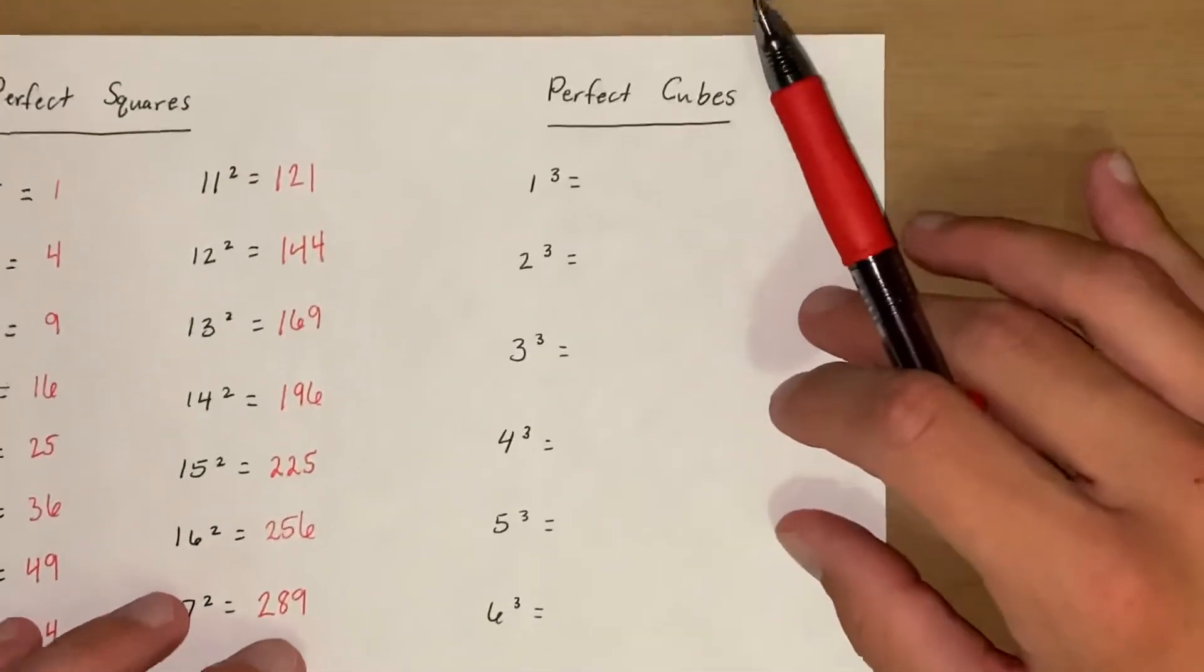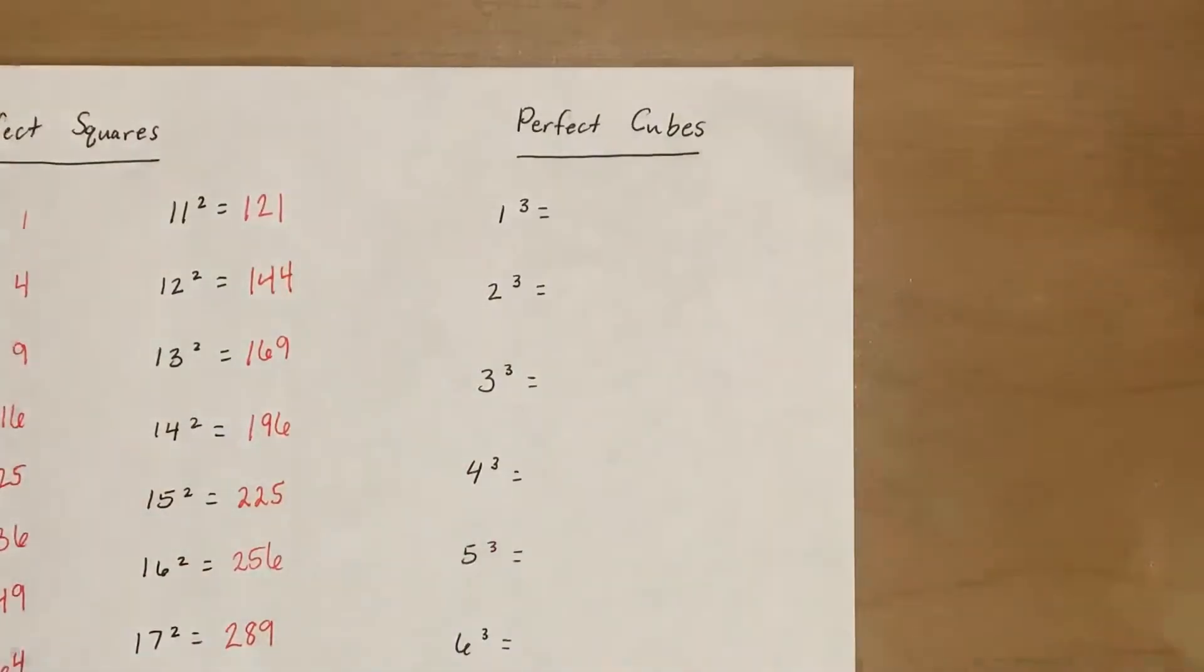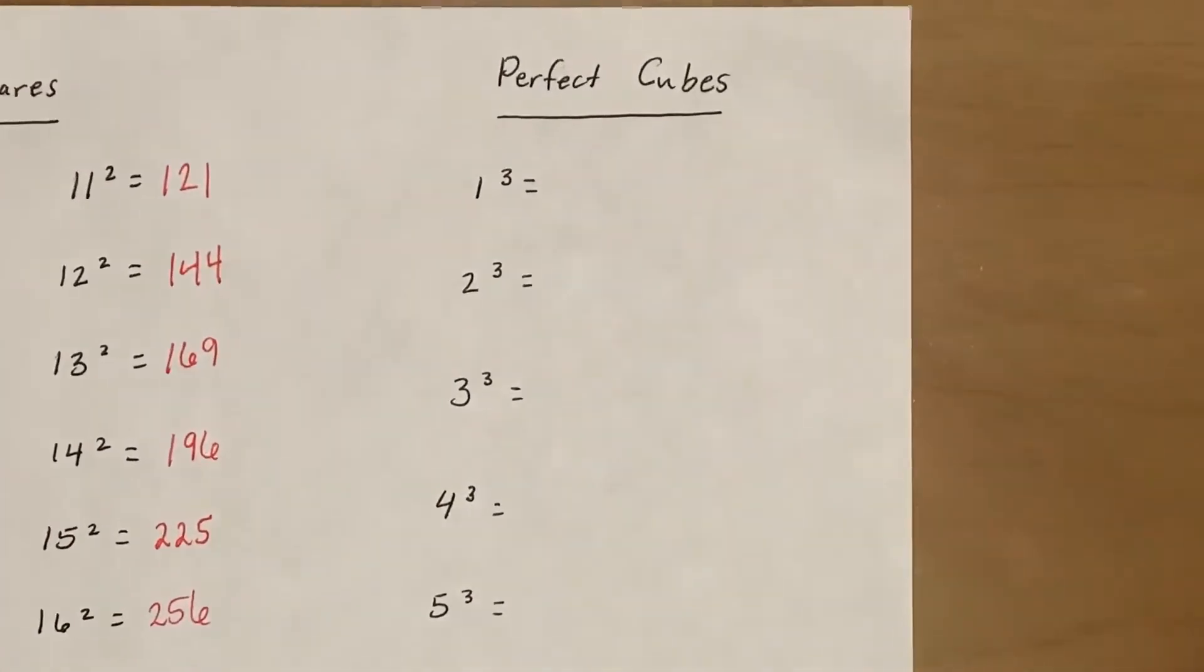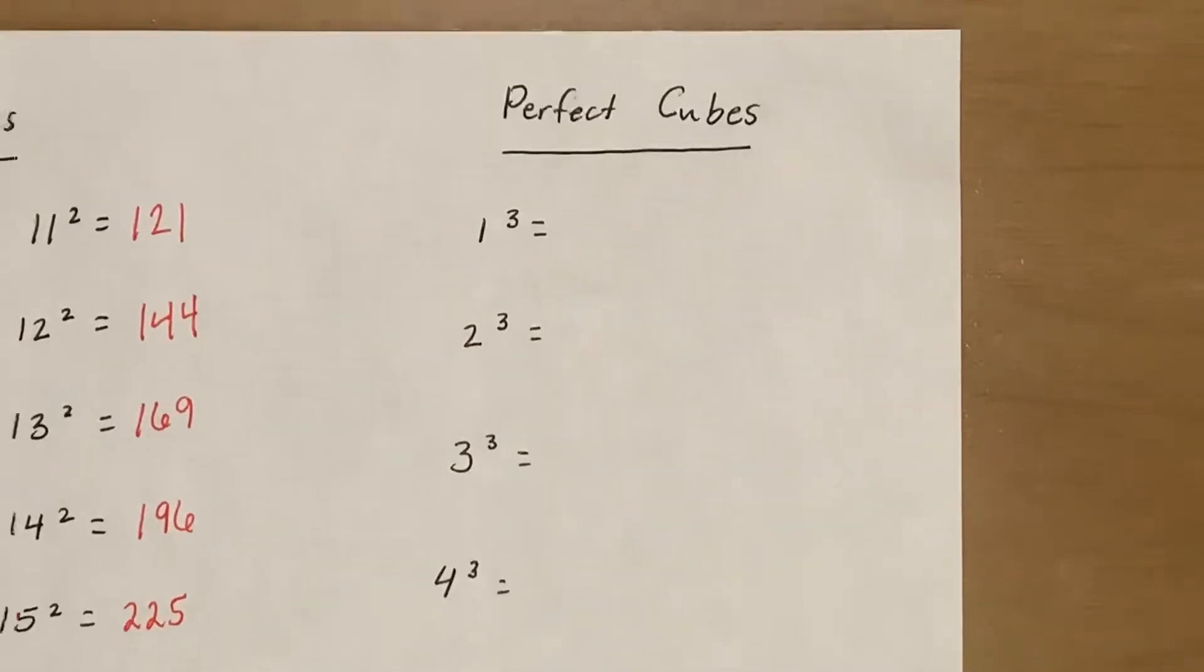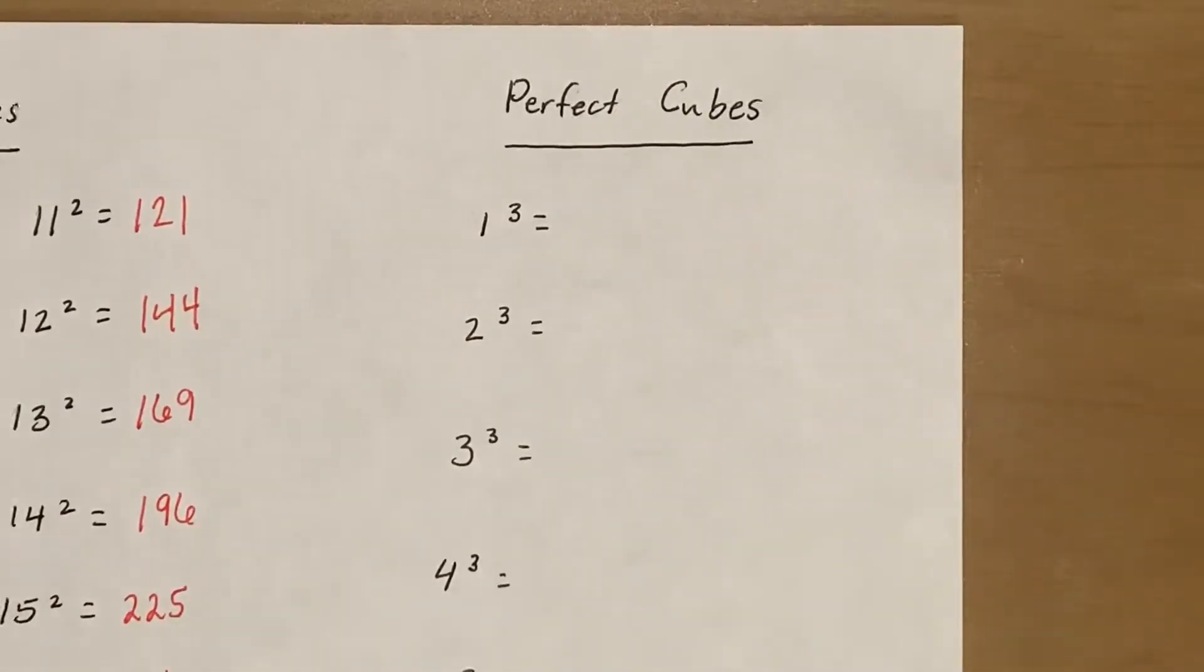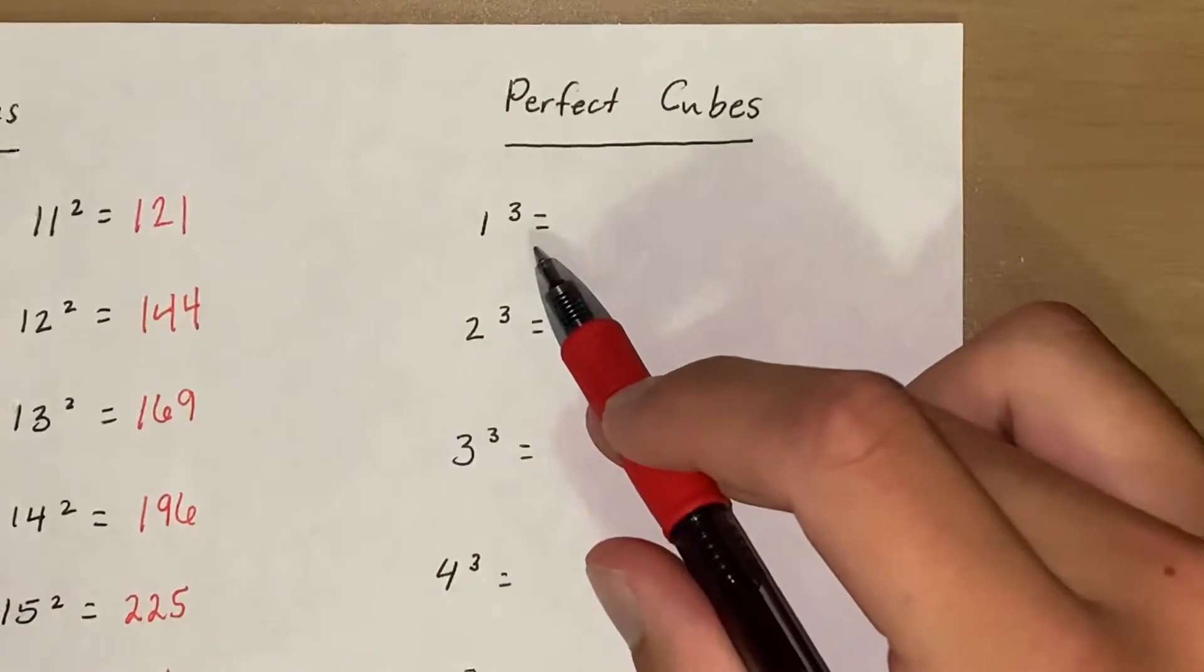Okay so let's look at our perfect cubes. Now perfect cubes, we're going to look at numbers that are being multiplied by themselves three times. So like this would be 1 times 1 times 1.